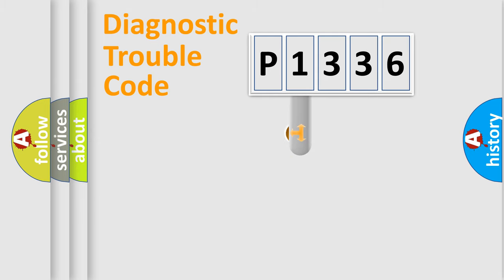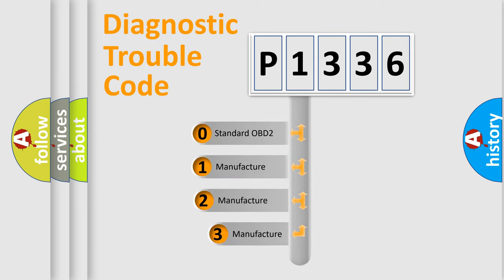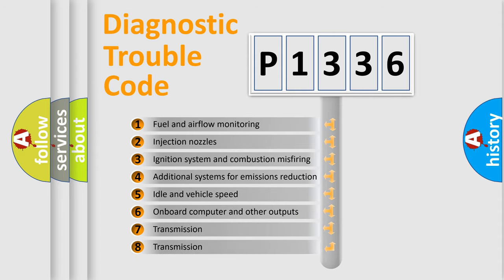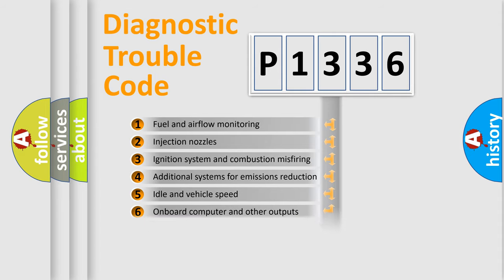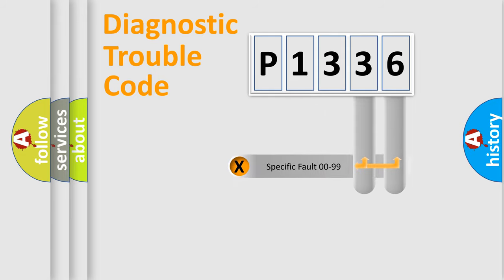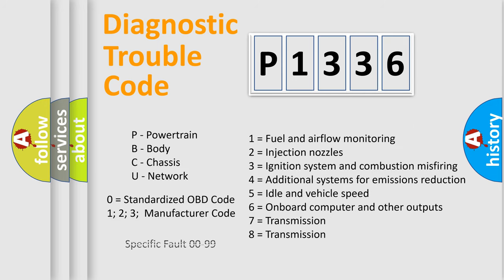This distribution is defined in the first character of the code. If the second character is expressed as zero, it is a standardized error. In the case of numbers 1, 2, or 3, it is a more manufacturer-specific error expression. The third character specifies a subset of errors. The last two characters define the specific fault of the group. Note that this division is valid only if the second character code is expressed by the number zero.